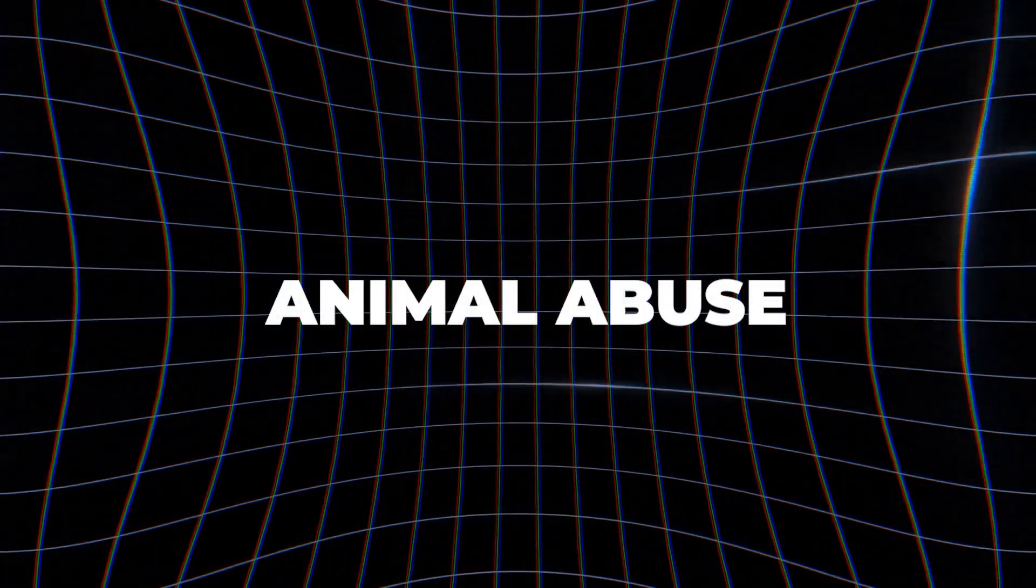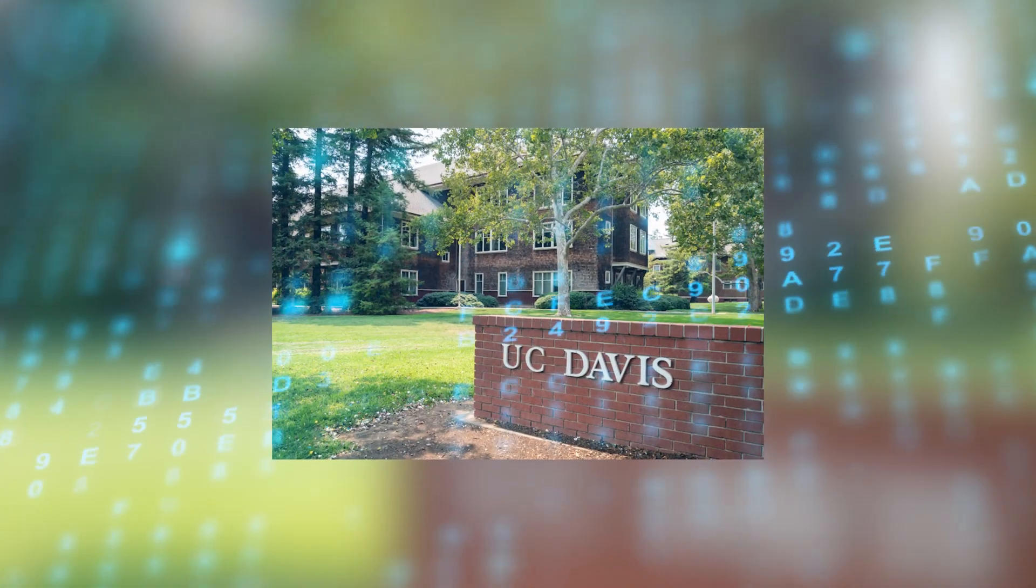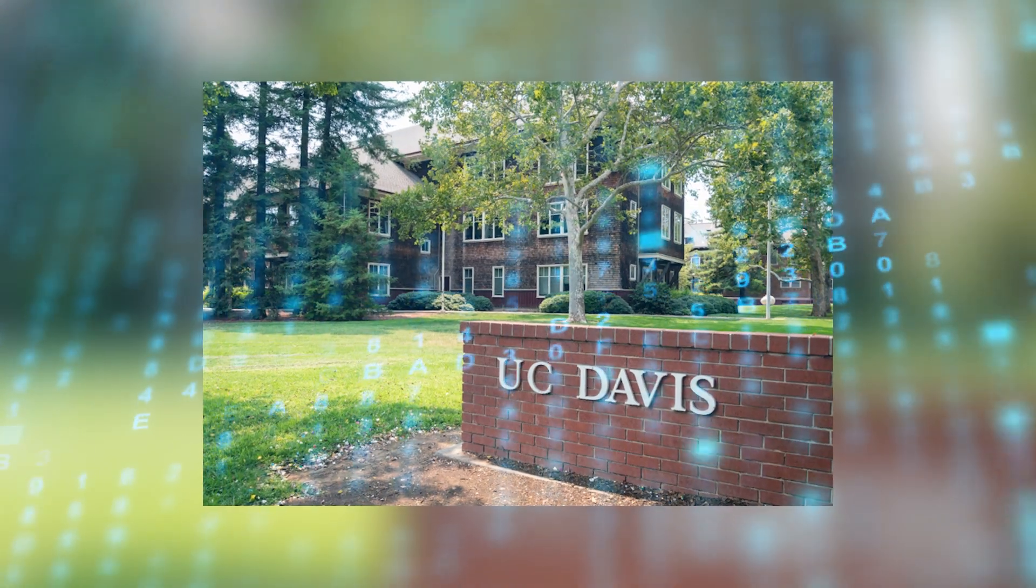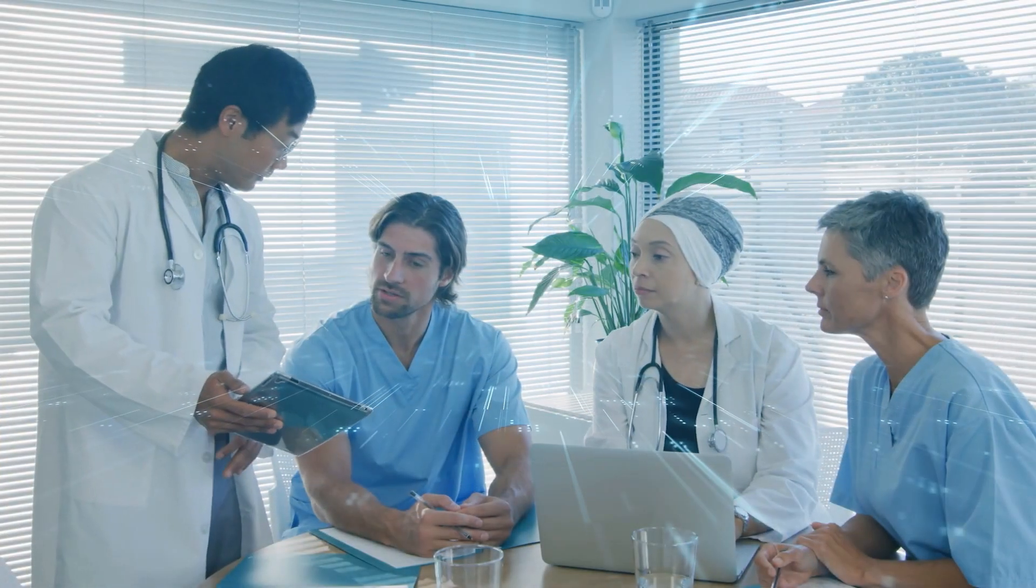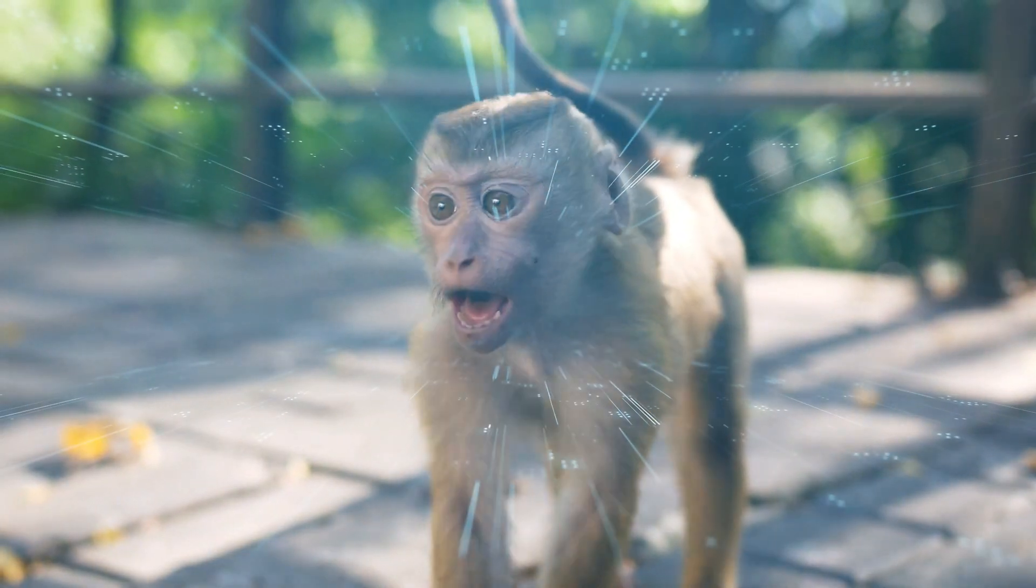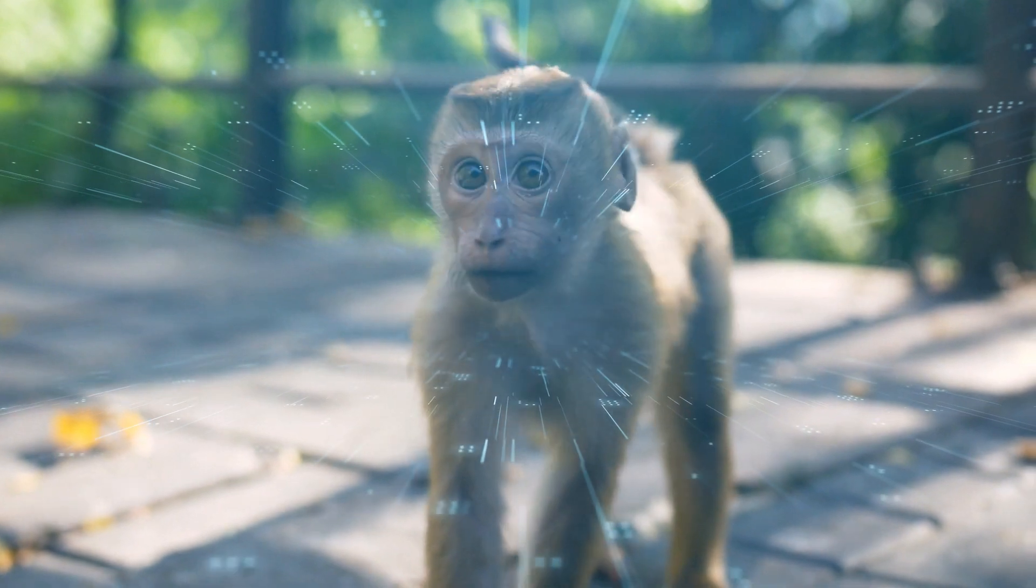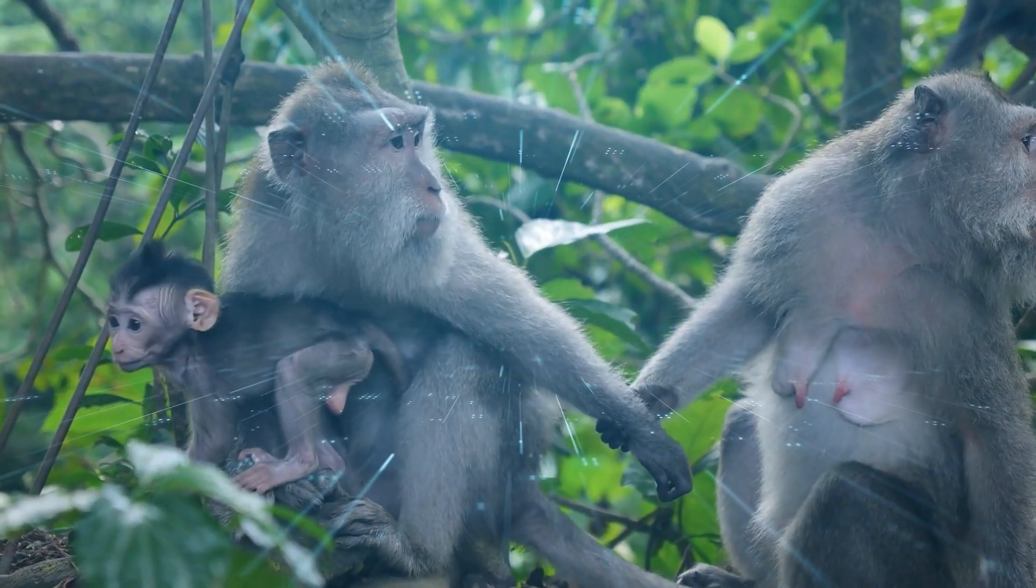Animal abuse. Allegations surfaced that Neuralink's experiments on monkeys, conducted in collaboration with UC Davis, involved inhumane treatment and resulted in the suffering and deaths of several test subjects. The Physicians Committee for Responsible Medicine, PCRM, accused Neuralink and UC Davis of violating the Federal Animal Welfare Act, detailing instances where monkeys were subjected to invasive procedures without adequate care.